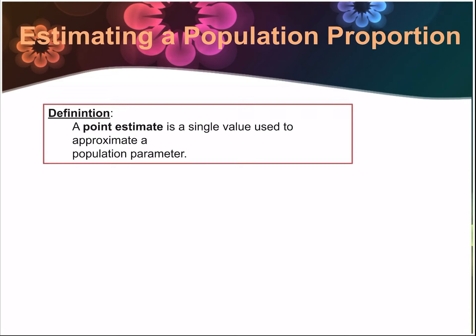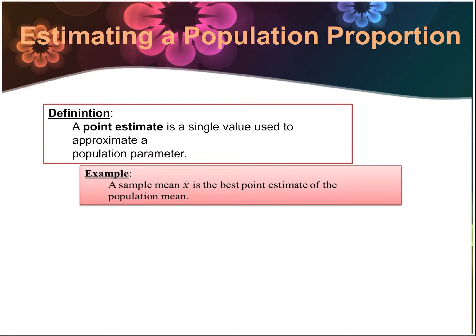A point estimate is a single value that's used to approximate a population parameter. The parameters are for the entire population. For example, a sample mean, x-bar, is the best point estimate for the population mean.